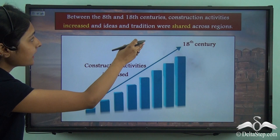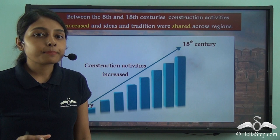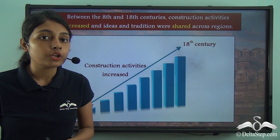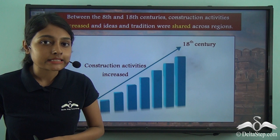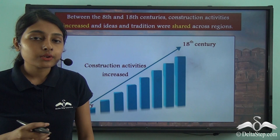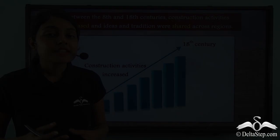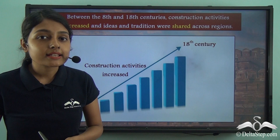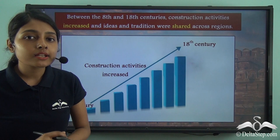Between the 8th and the 18th centuries, construction activities increased. This is a key point in our lessons on rulers and buildings. During this period in medieval India, various kinds of temples, mosques, canals, monuments, mausoleums, and minarets were built across the Indian subcontinent.